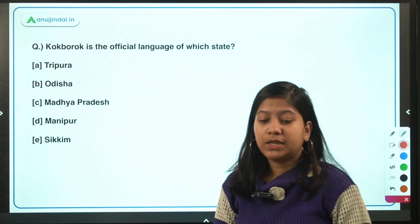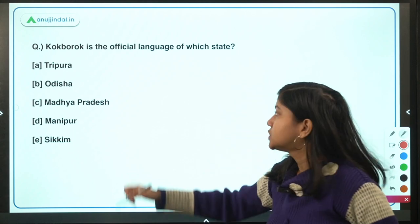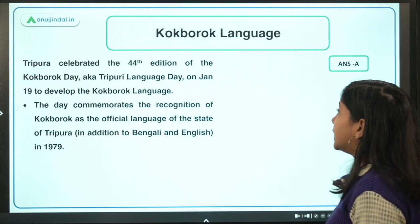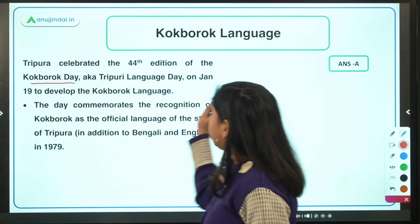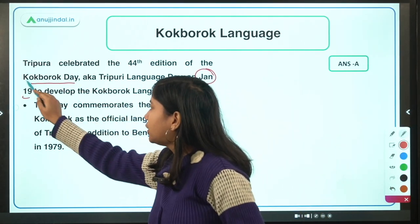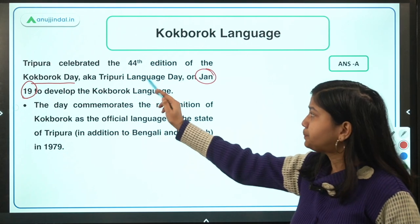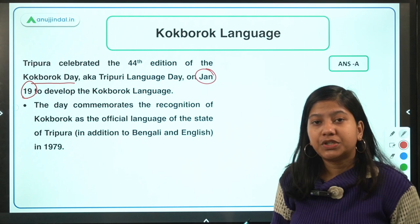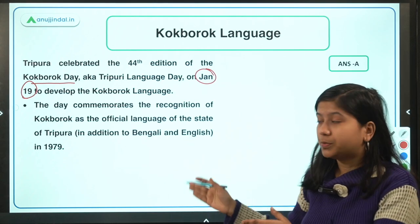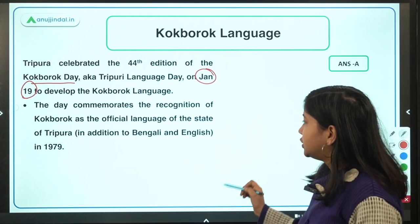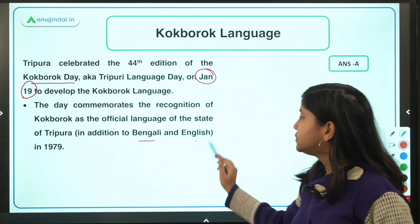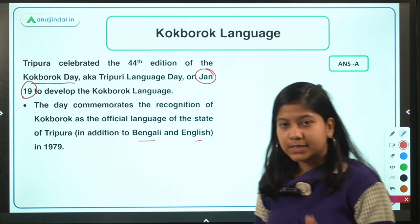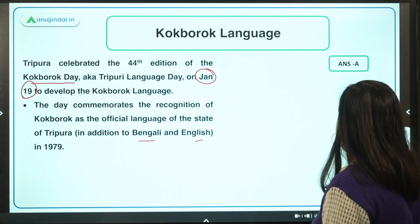The next question: Kokborok is the official language of which state? The correct answer is Tripura. Kokborok Day was celebrated on January 19 by Tripura. It is one of the official languages of the state of Tripura. Bengali and English are the other official languages of the state.